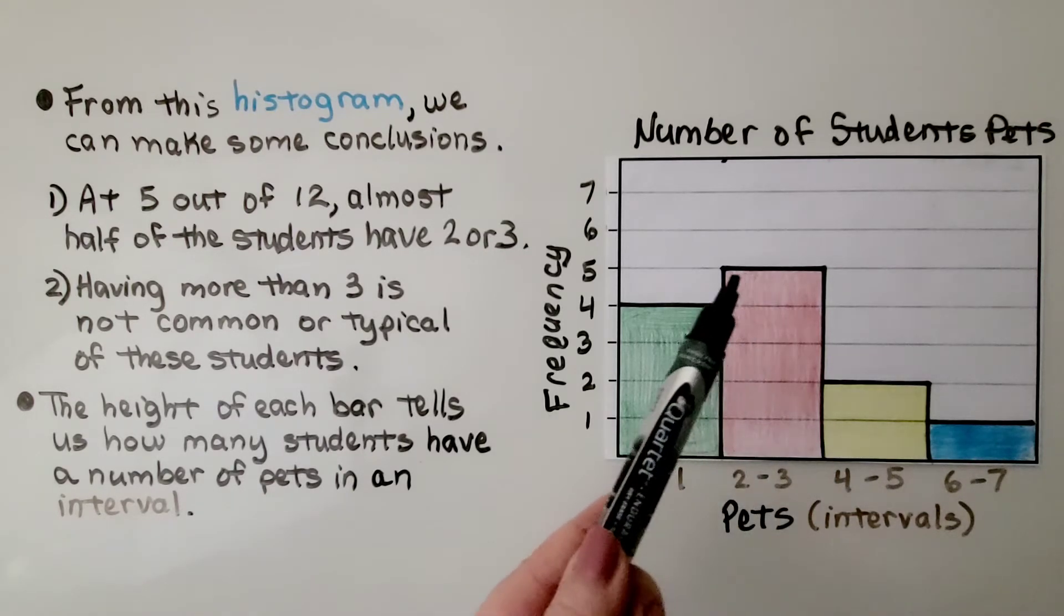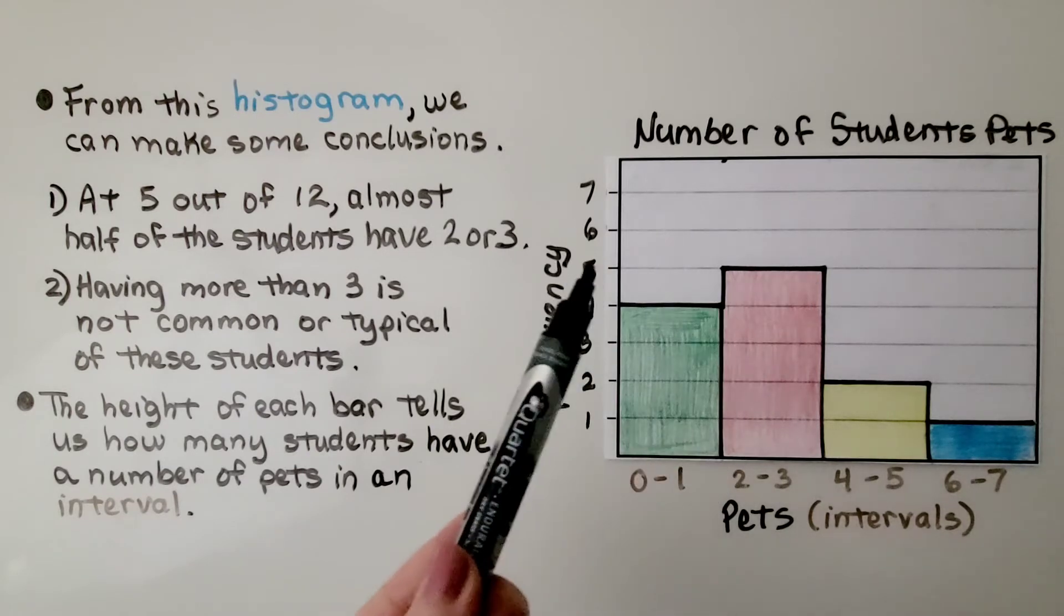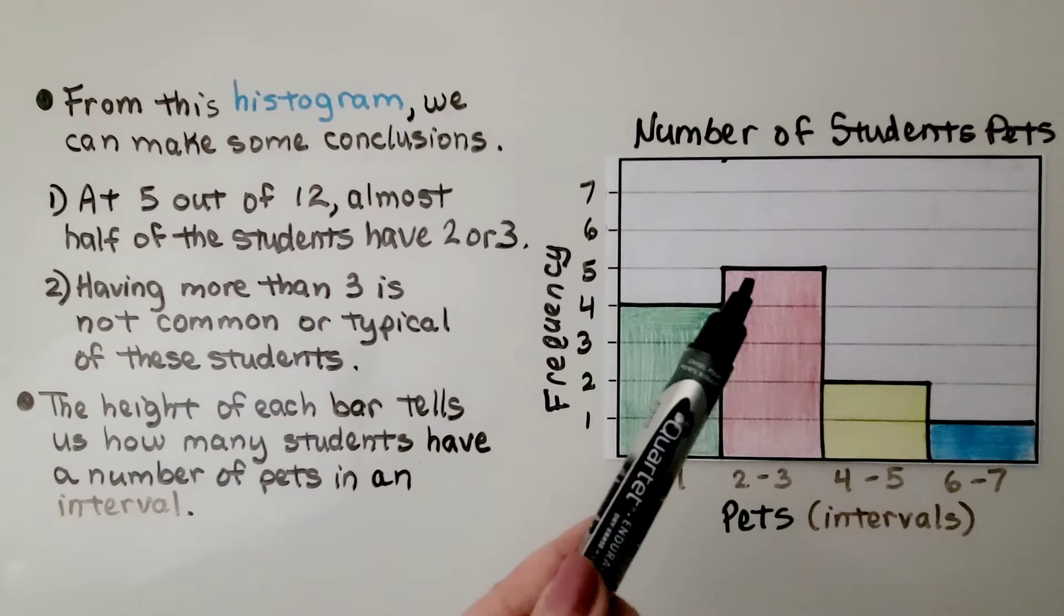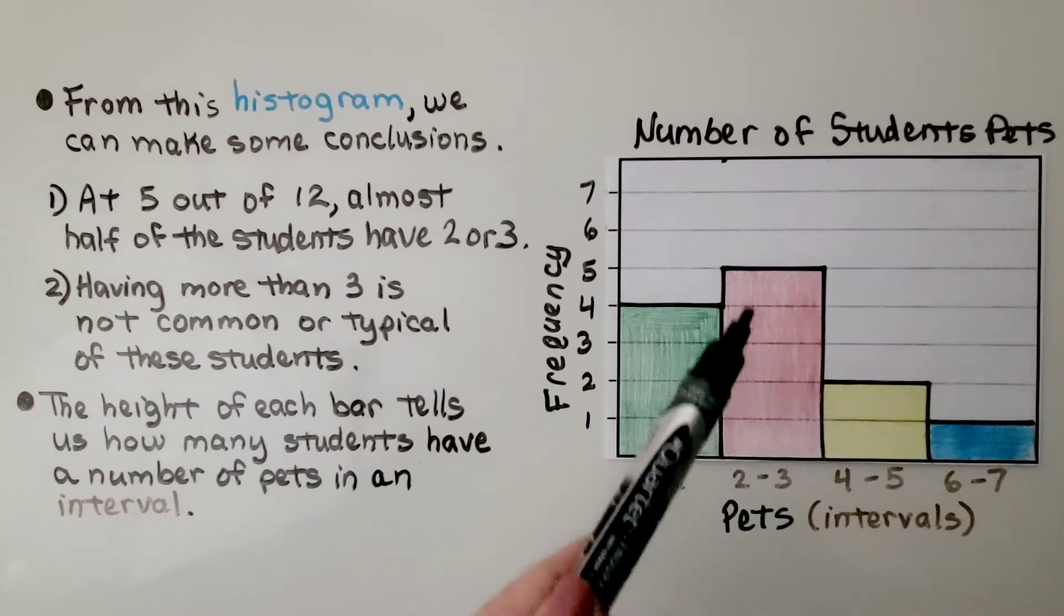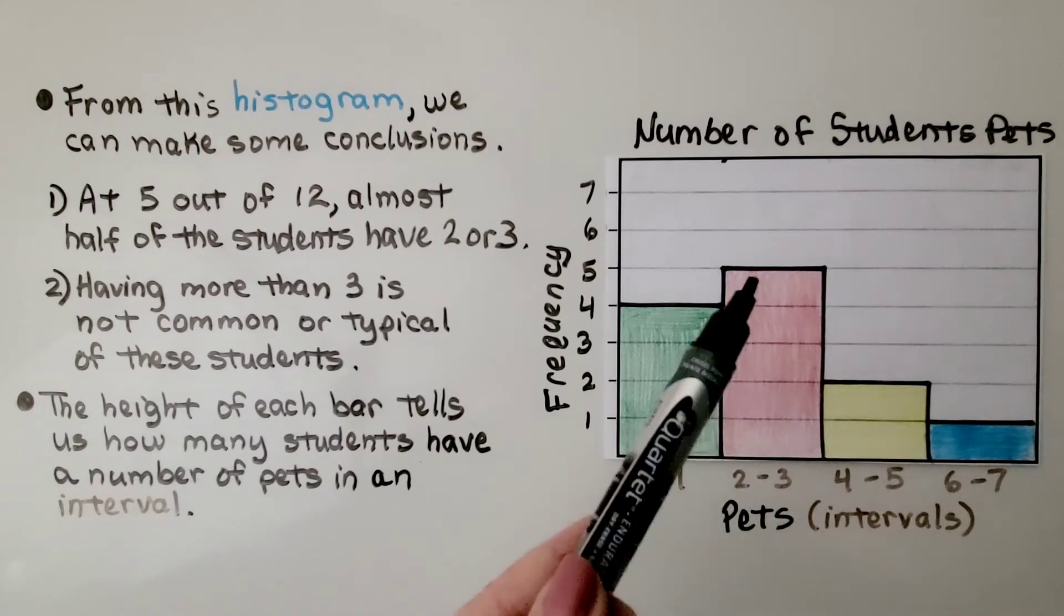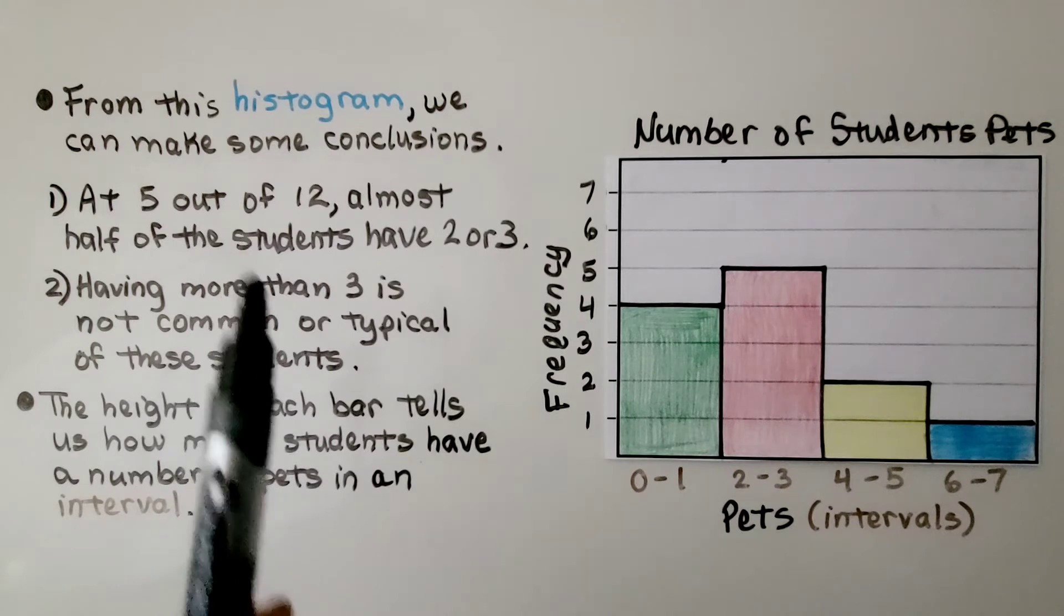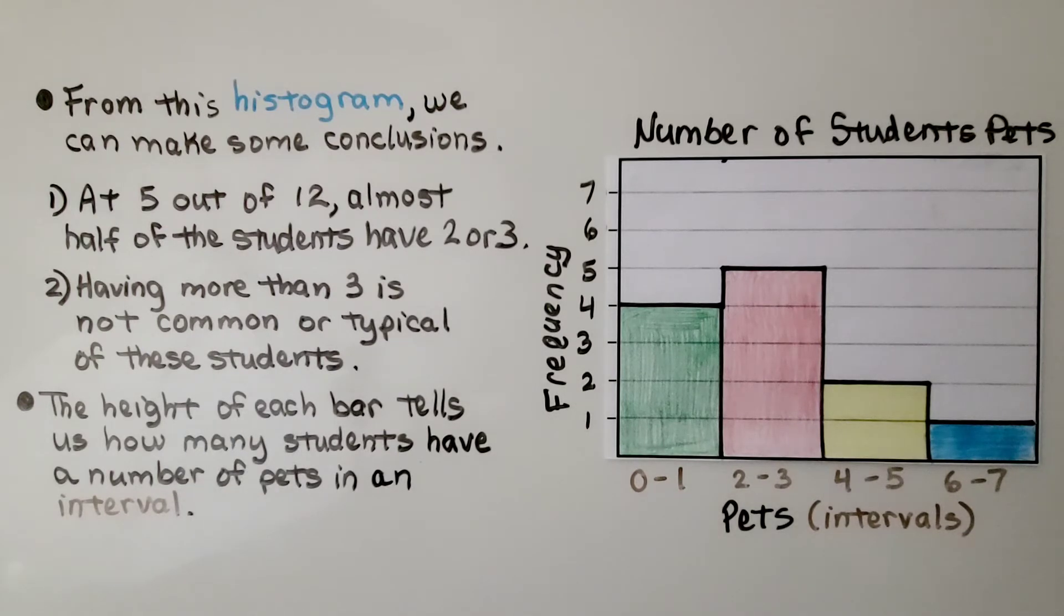So there are 5 here. So that's 5 students. And we have 4 plus 5. That's 9, 10, 11, 12 students in all. And 5, 6 is half of 12. So it's almost half of the students have 2 or 3 pets. Having more than 3 is not common or typical of these students.